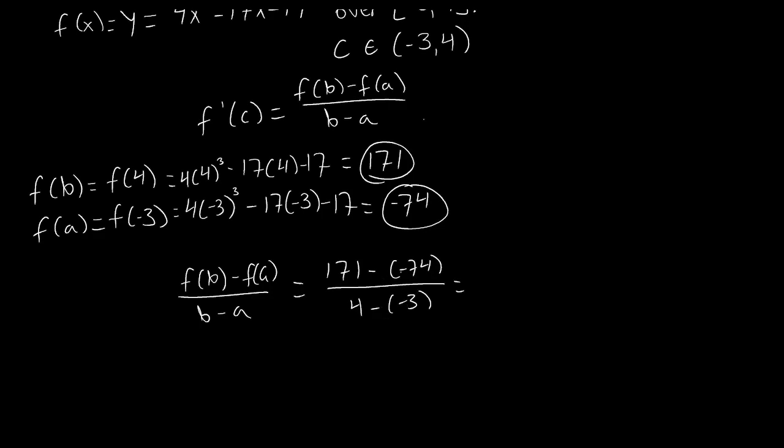Whenever we subtract a negative, we get a positive, right? So we have 171 plus 74 and 4 plus 3. Well, our denominator becomes seven. That's kind of plain and easy to see, but 171 plus 74 gives us 245. And if we reduce this, 245 divided by 7 gives us 35.